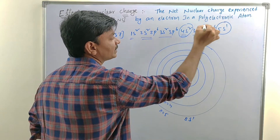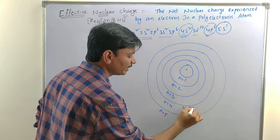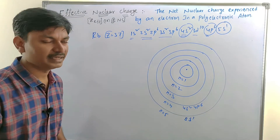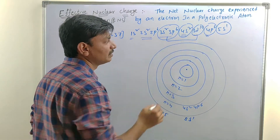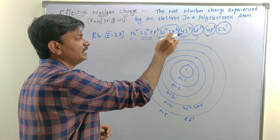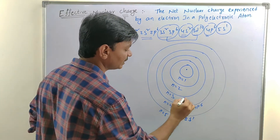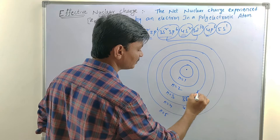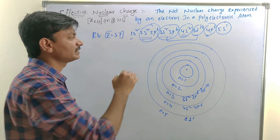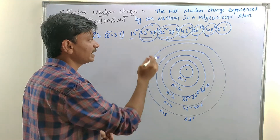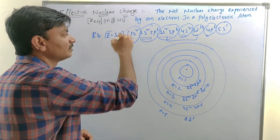The 4th shell has 4s2 and 4p6 electrons. The 3rd shell has 3s2, 3p6, and 3d10 — that is 3 subshells S, P, and D. The 2nd shell has 2s2 and 2p6 — S and P subshells. And lastly, 1s2 is present in the 1st shell of rubidium.